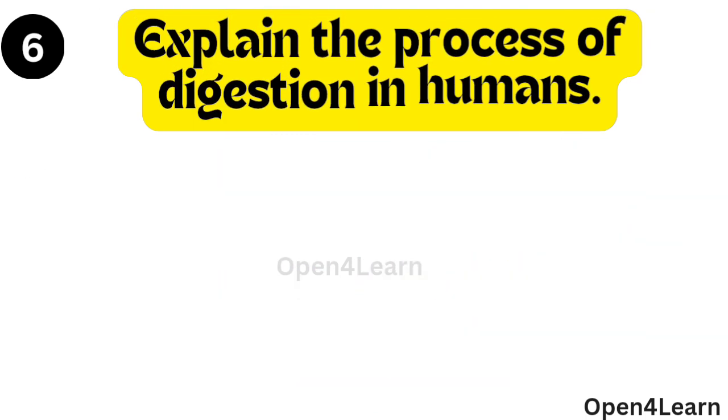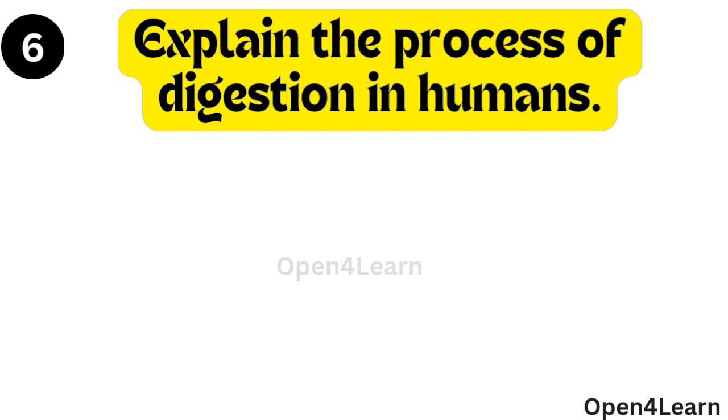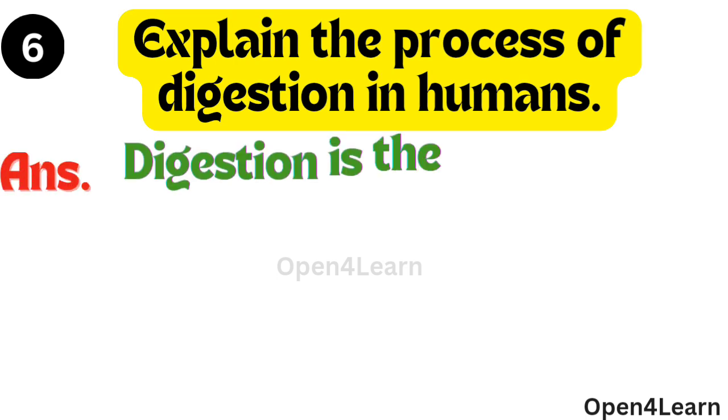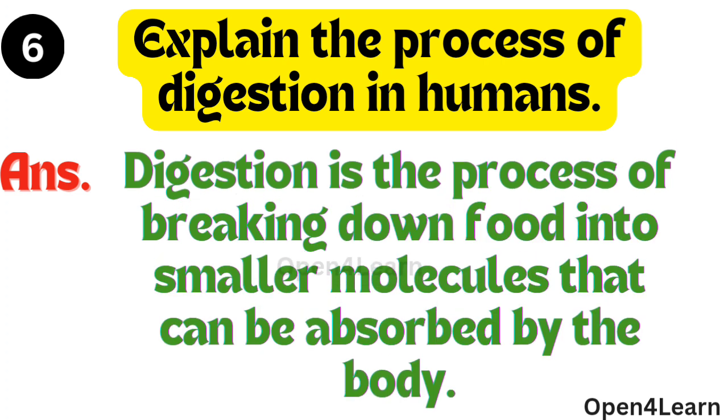Question, explain the process of digestion in humans. Answer, digestion is the process of breaking down food into smaller molecules that can be absorbed by the body.